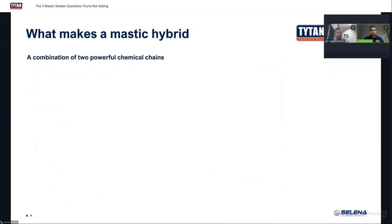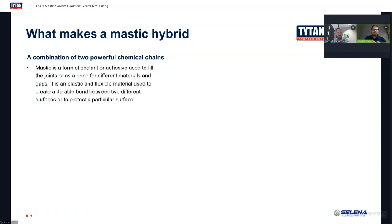Now we go to our second question: what makes a mastic hybrid? First we have to think about the chemistry behind mastic hybrid sealants. The word 'hybrid' means it's a combination of two powerful chemical chains. Mastic is a form of sealant or adhesive used to fill joints and bond different materials — that's what mastic means. What makes this mastic a hybrid is the base chemicals used.